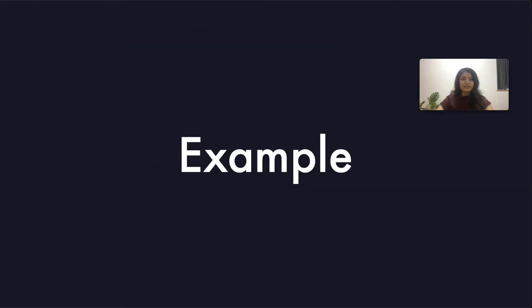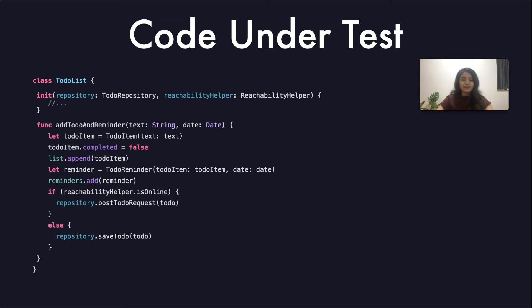Let's look at an example. This is a simple to-do list API. The main method is creating a to-do and a reminder, and then depending on network availability it's doing some stuff on the repository.